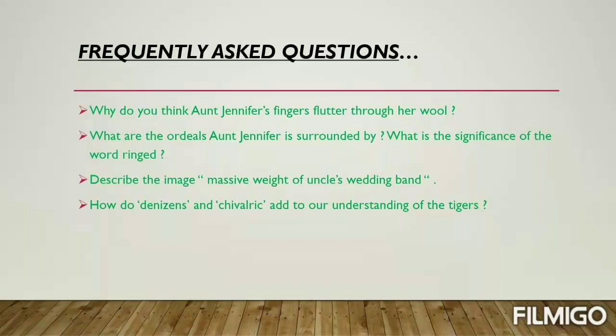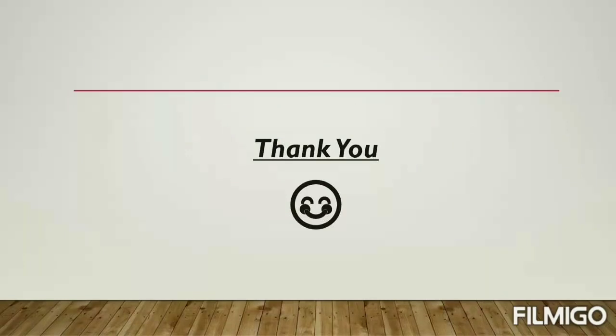Last question: How do 'denizens' and 'chivalric' add to our understanding of the tigers? Denizens means residents, and chivalric means honorable. These words indicate that the tigers move about freely and boldly in their dignified habitat. Their honorable and dignified attitude is in contrast with Aunt Jennifer's circumstances, as she lives under suppression and domination of her husband. Good luck students, thank you!